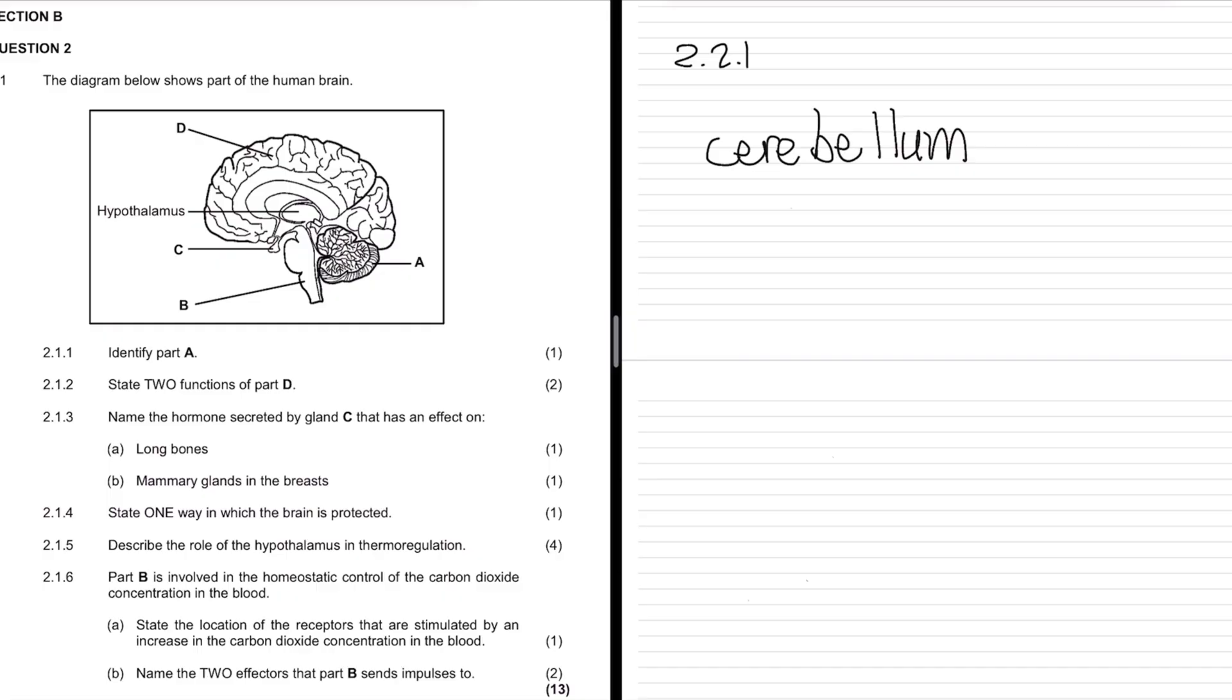Next is 2.2.2 - state two functions of part D. This is your cerebrum, the big brain. They don't ask you to label it, just the functions. The big brain does everything - at the back is vision, moving forward we have sensory, interpretation, and the frontal lobe with movements.